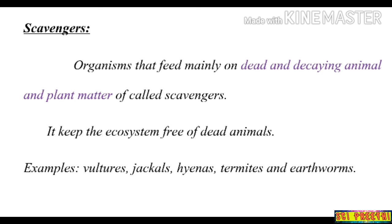Next we will discuss scavengers. Scavengers are animals that eat dead and decaying animals and plant matter. Organisms that feed mainly on dead and decaying animals and plant matter are called scavengers. Scavengers keep the ecosystem free of dead animals. Unlike carnivorous animals that kill other animals for food, scavengers do not hunt or kill — instead they feed on already dead animals.